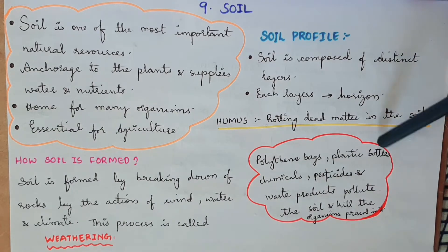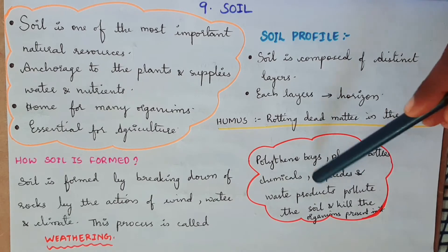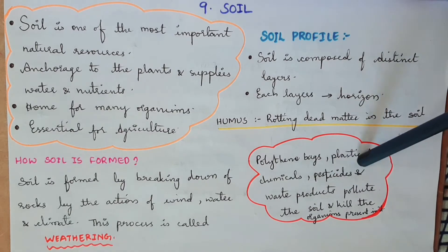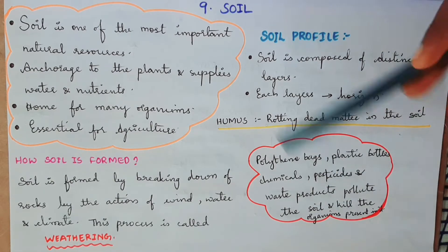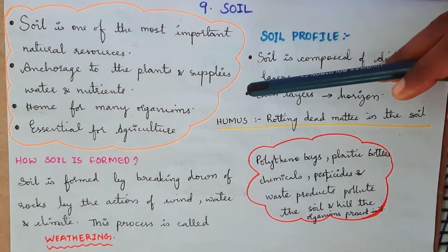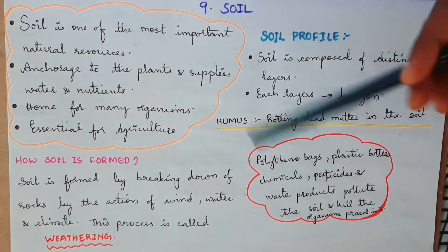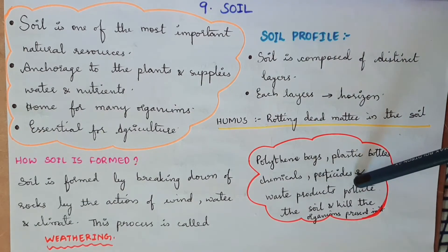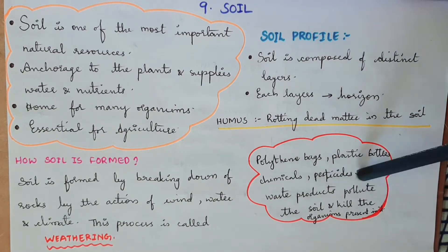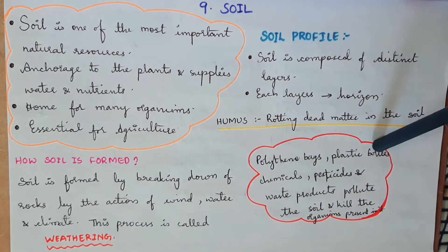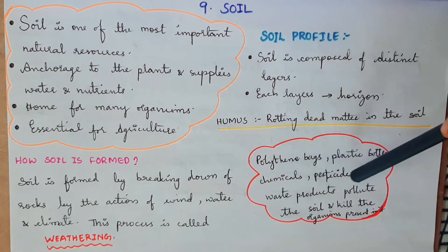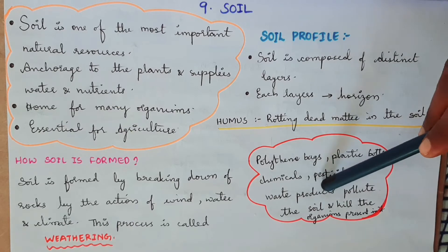Soil is polluted by polythene bags, plastic bottles, chemicals, pesticides, and waste products. These are the main causes of soil pollution.